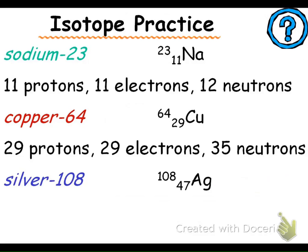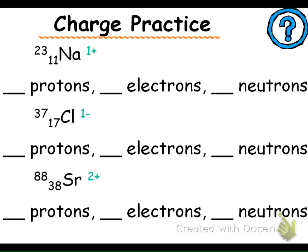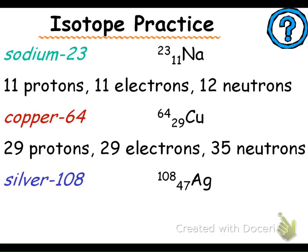For silver-108: again, this is not telling you the charge, it's telling you the mass number. We know silver's atomic number is 47. The mass number is 108, so you know that you have 47 protons, 47 electrons, and 61 neutrons. That's not going to show up on screen here, but if you click open the PowerPoint on School Fusion, you'll find that. Pause the video quickly and fill in those protons, neutrons, and electron numbers, then check it because I'll put up the answers in just a second.